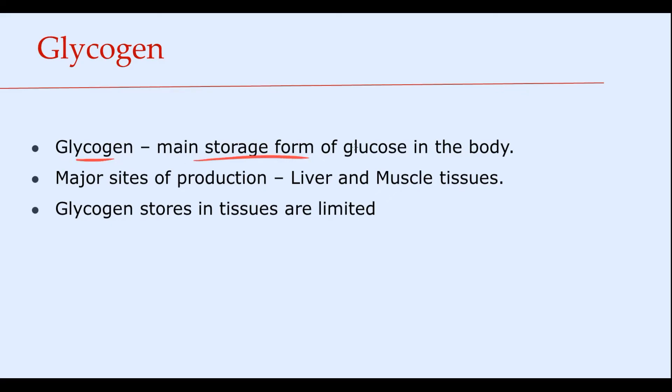Glycogen is the main storage form of glucose in our body, and the major sites of glycogen production are liver and muscle tissues. These two tissues store the highest amount of glycogen in our body.